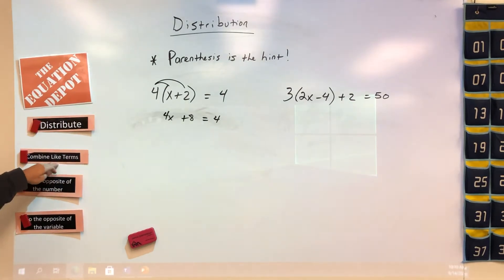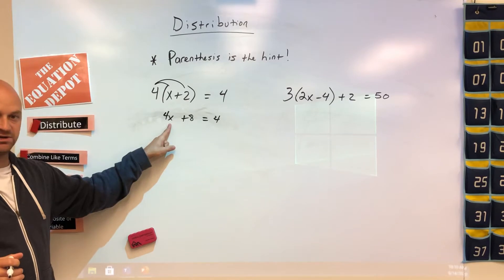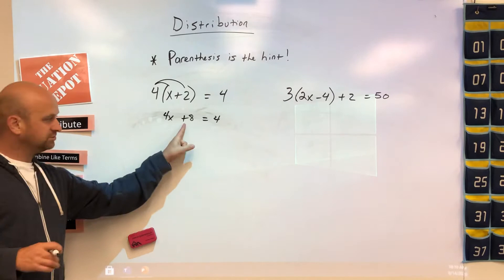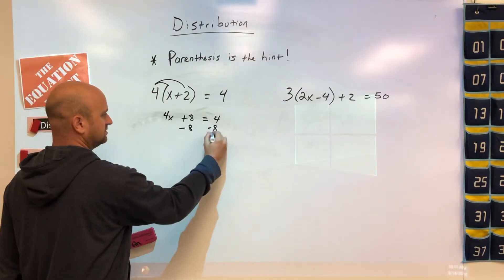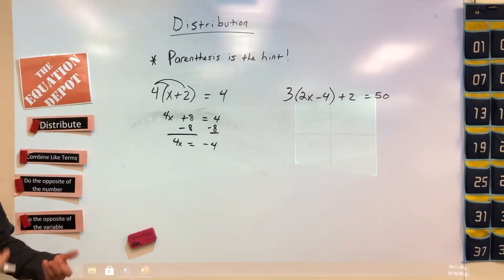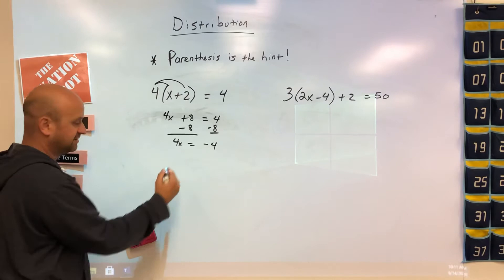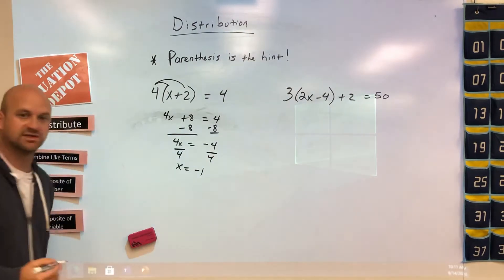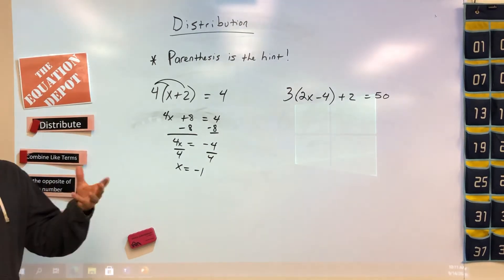Now we go and look, do we have to combine like terms? Remember, combining like terms happens on one side of the equal sign. If we look here, there's nothing to combine on the left side. The next step says do opposite of the number. We end up with 4x equaling negative 4. The last step is to do opposite of the variable term. For multiplying x by 4, we're going to divide by 4, and we get x equaling negative 1.